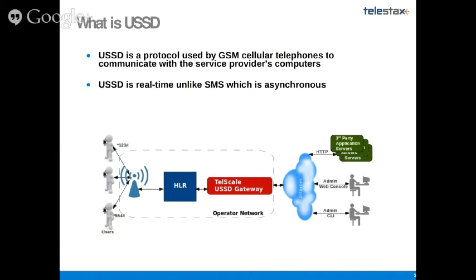As the diagram shows, if the user is initiating USSD, it always ends with hash. Most of the time — 99% of the time — USSD begins with asterisk. You can have as many asterisks as you want in between, like star-one-two-three-star-blah-blah-hash, which goes to the operator network. It comes to the HLR — the network node where the profile of the user remains and all properties of this particular MSISDN or user reside. The HLR forwards that to the USSD gateway, which in this case is the TelScale USSD gateway. It exposes the user's request via HTTP to the third-party application, and the application can send back the response. Everything happens in one dialogue.